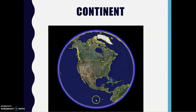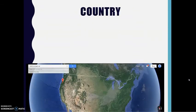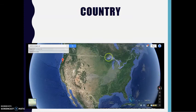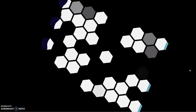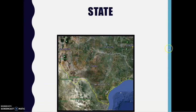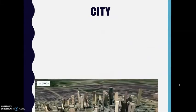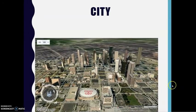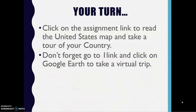Continent — this is a continent, the continent of North America. Country — this is the country of the United States. State — here's the state of Texas; our capital is Austin. This is San Antonio, another city highlighted in our state. City — this is an image of a city.